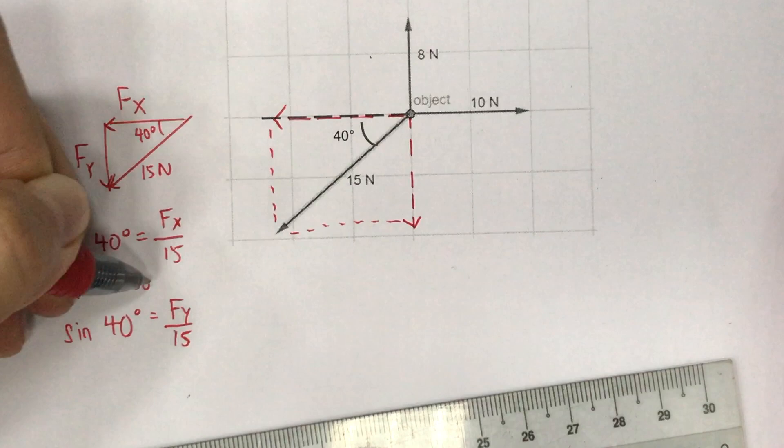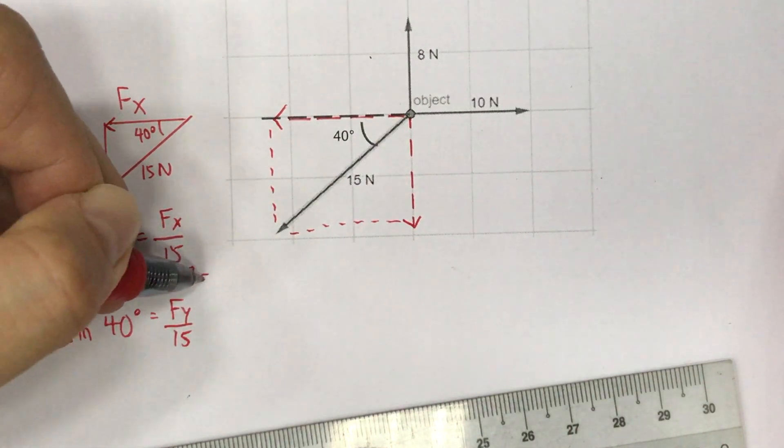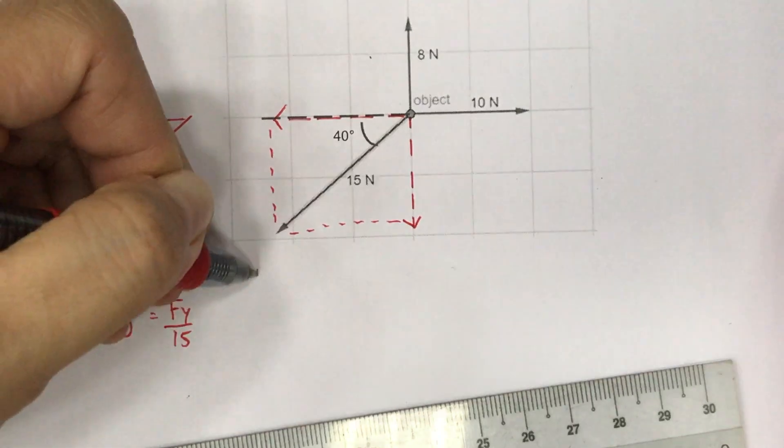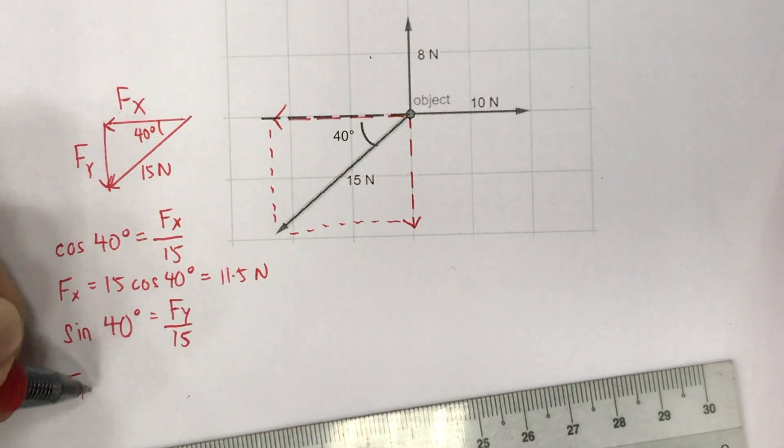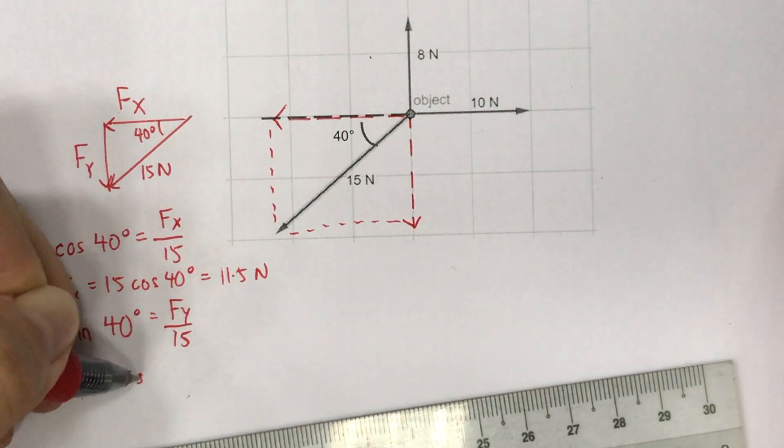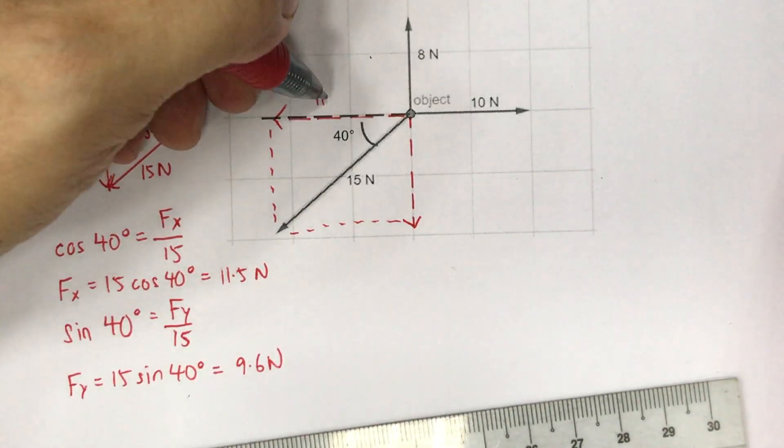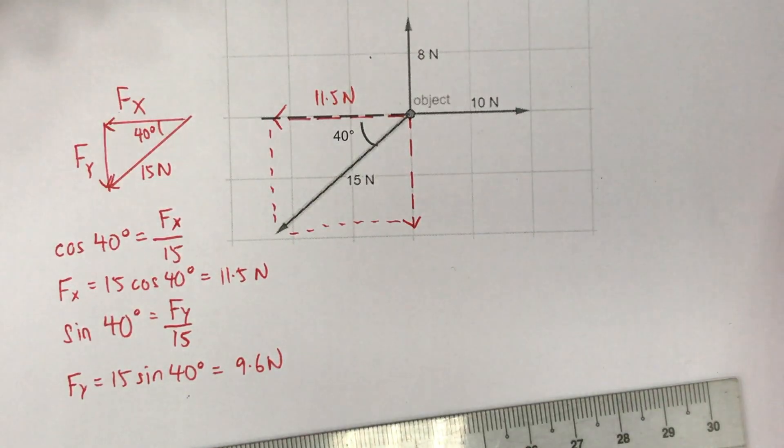So to solve for fx, you need to take 15 multiplied by cosine 40 degrees. So that gives us 11.5N. So I'll write that in the diagram as well.